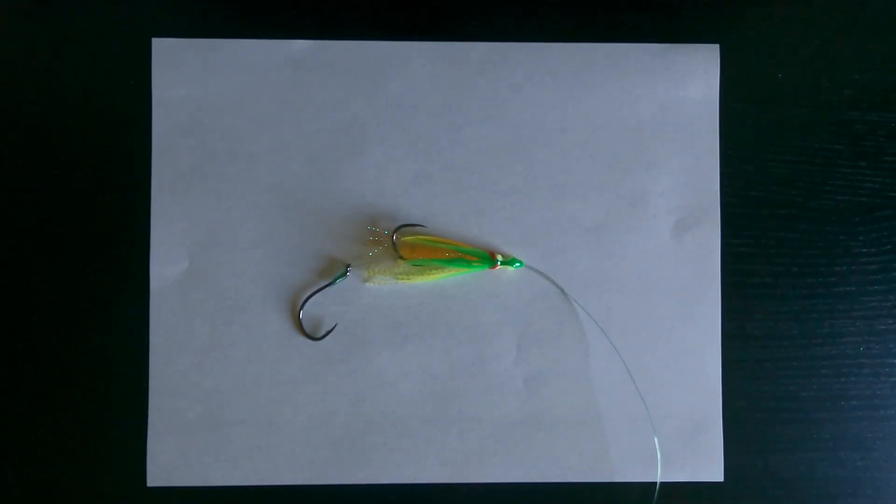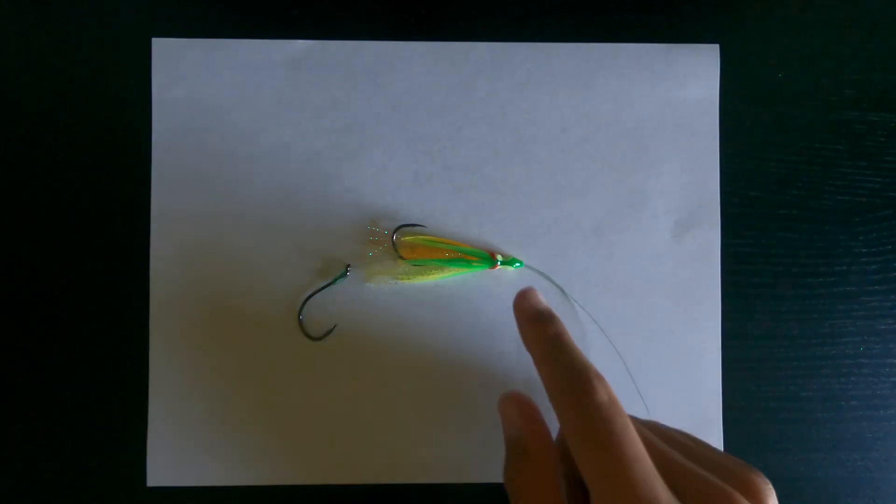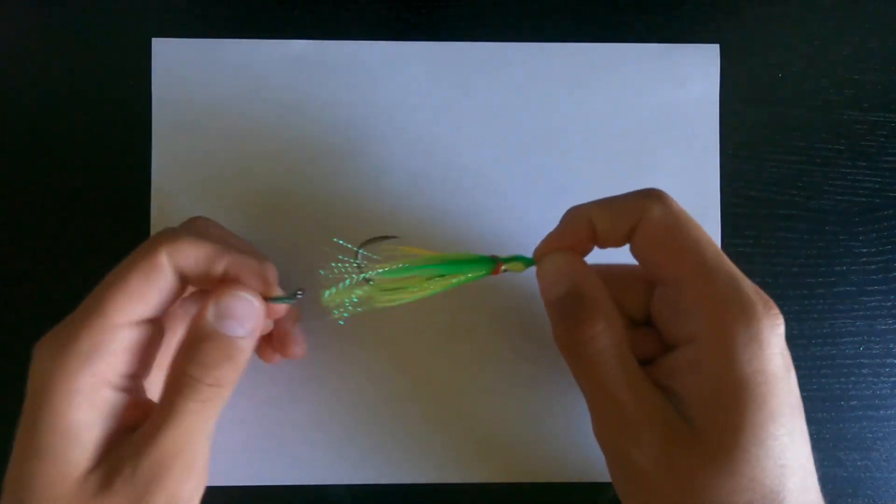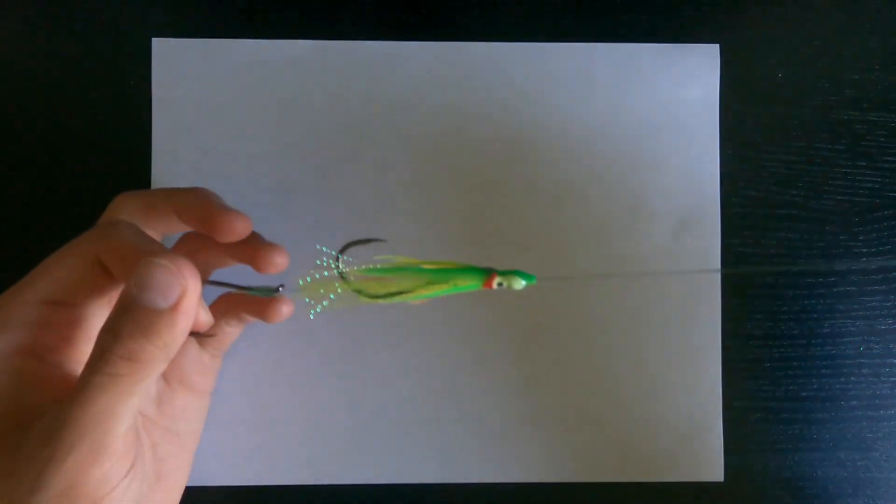What's up guys and welcome back to the channel. Today I just want to make a quick video to show you guys how to tie a tinsel skirt with a hoochie. Pretty simple, you just tie two hooks on there, then you put your hoochie and your tinsel skirt on.